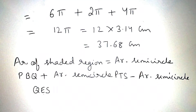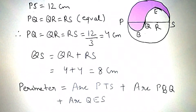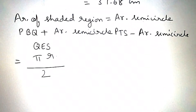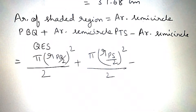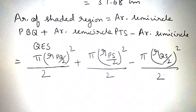Area of the shaded region is equal to area of semicircle PBQ plus area of semicircle PTS minus area of semicircle QES. In semicircle PBQ, PQ is a diameter, therefore radius will be PQ by 2. In semicircle PTS, PS is a diameter, therefore its radius will be PS by 2. In semicircle QES, QS is a diameter, therefore its radius will be QS by 2.